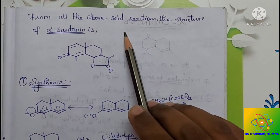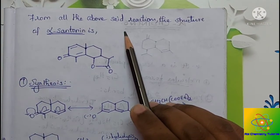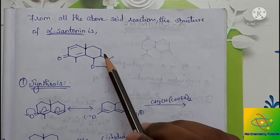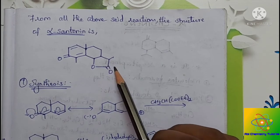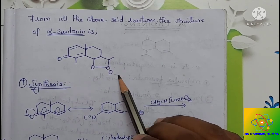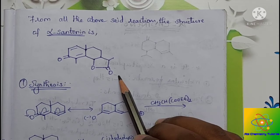From all the above reactions, we finally derived the structure of alpha-santone. The structure was then confirmed by synthesis.